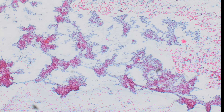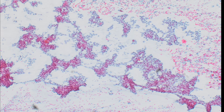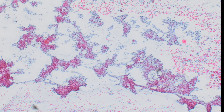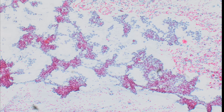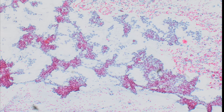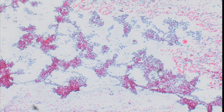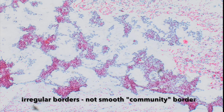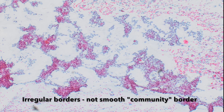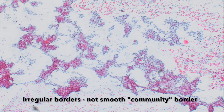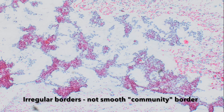Ideally, we do this using the least amount of material possible, so we try to make morphologic classifications whenever we can. First, the contours of tumor clusters are typically irregular, not the smooth contours you sometimes see in adenocarcinoma, also called community border.